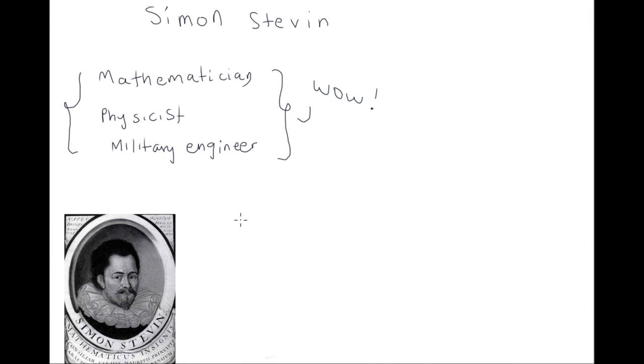Simon Stevin, sometimes called Stevinus, was a Flemish mathematician, physicist, and military engineer. He was active in a great many areas of science and engineering, both theoretical and practical. He also translated various mathematical terms into Dutch, making it one of the few European languages in the world for mathematics, wiskunde.